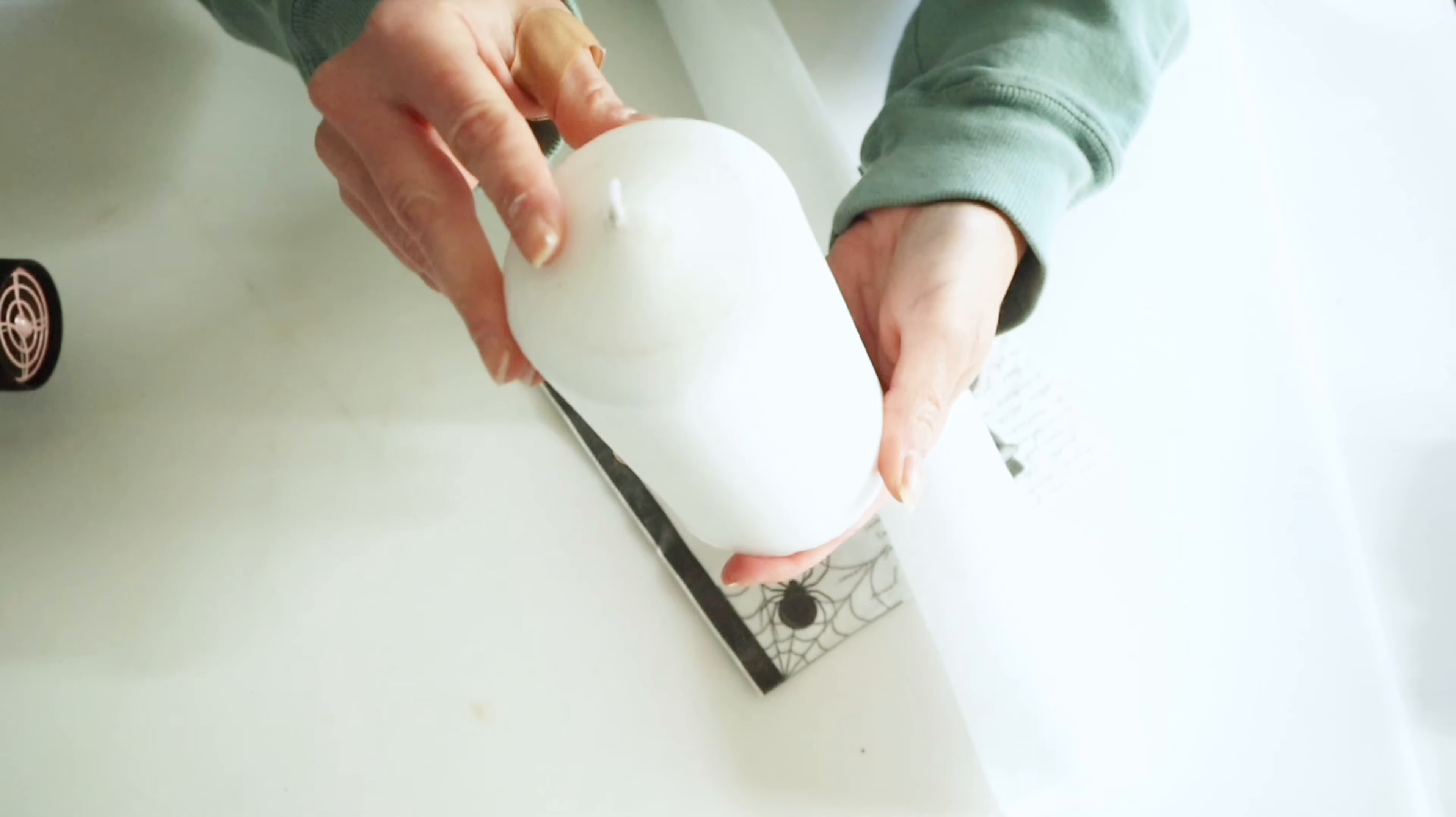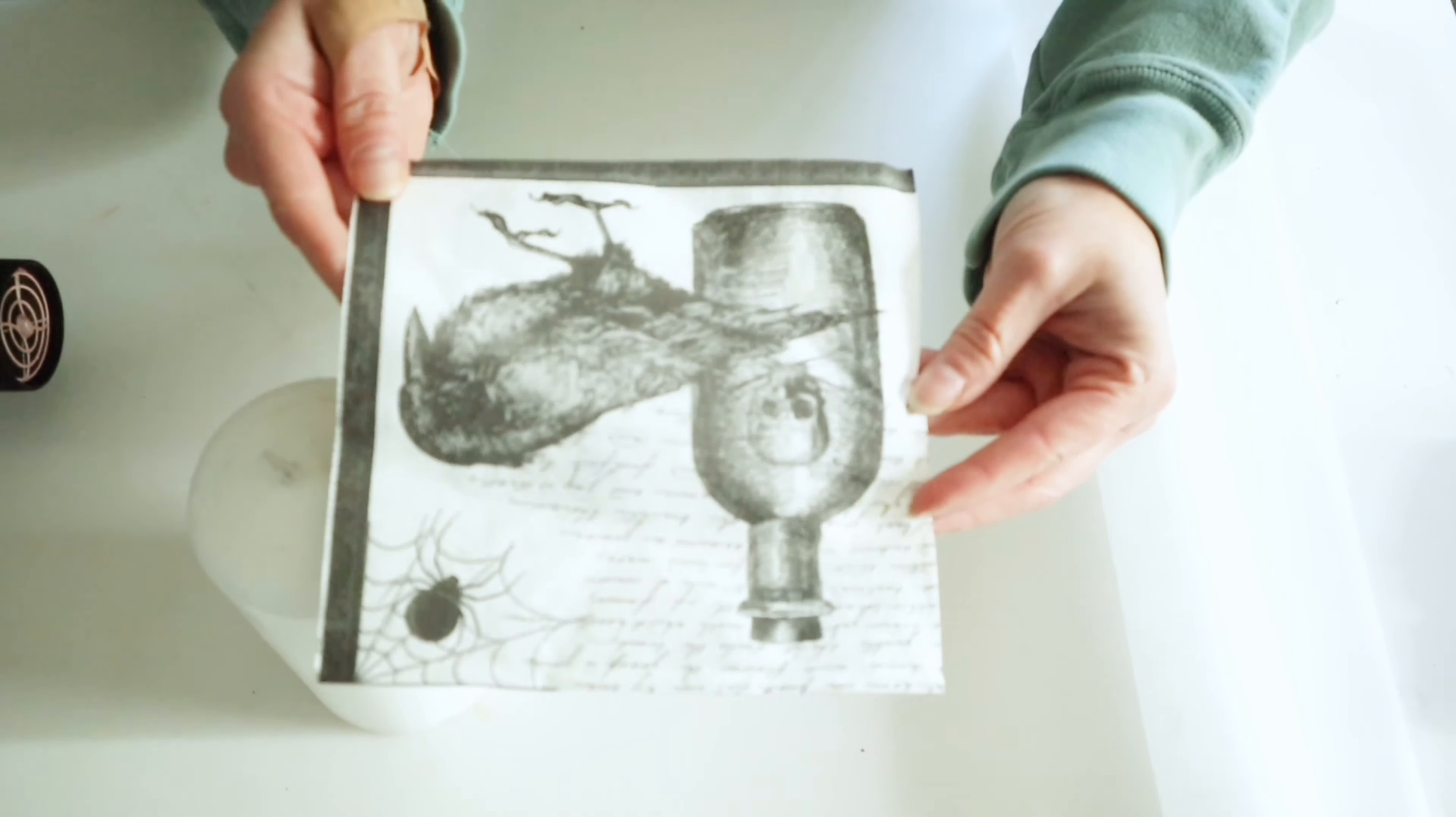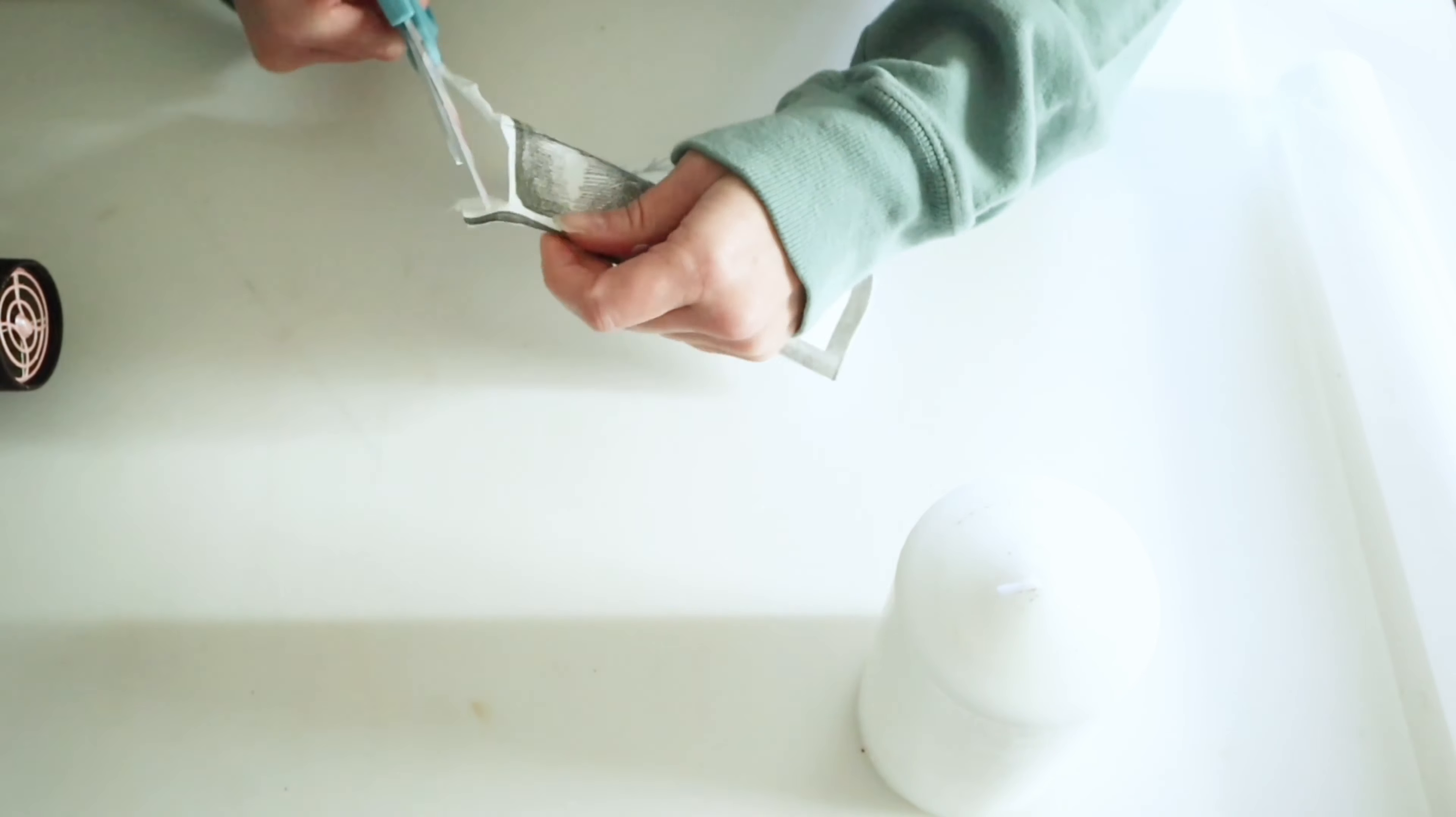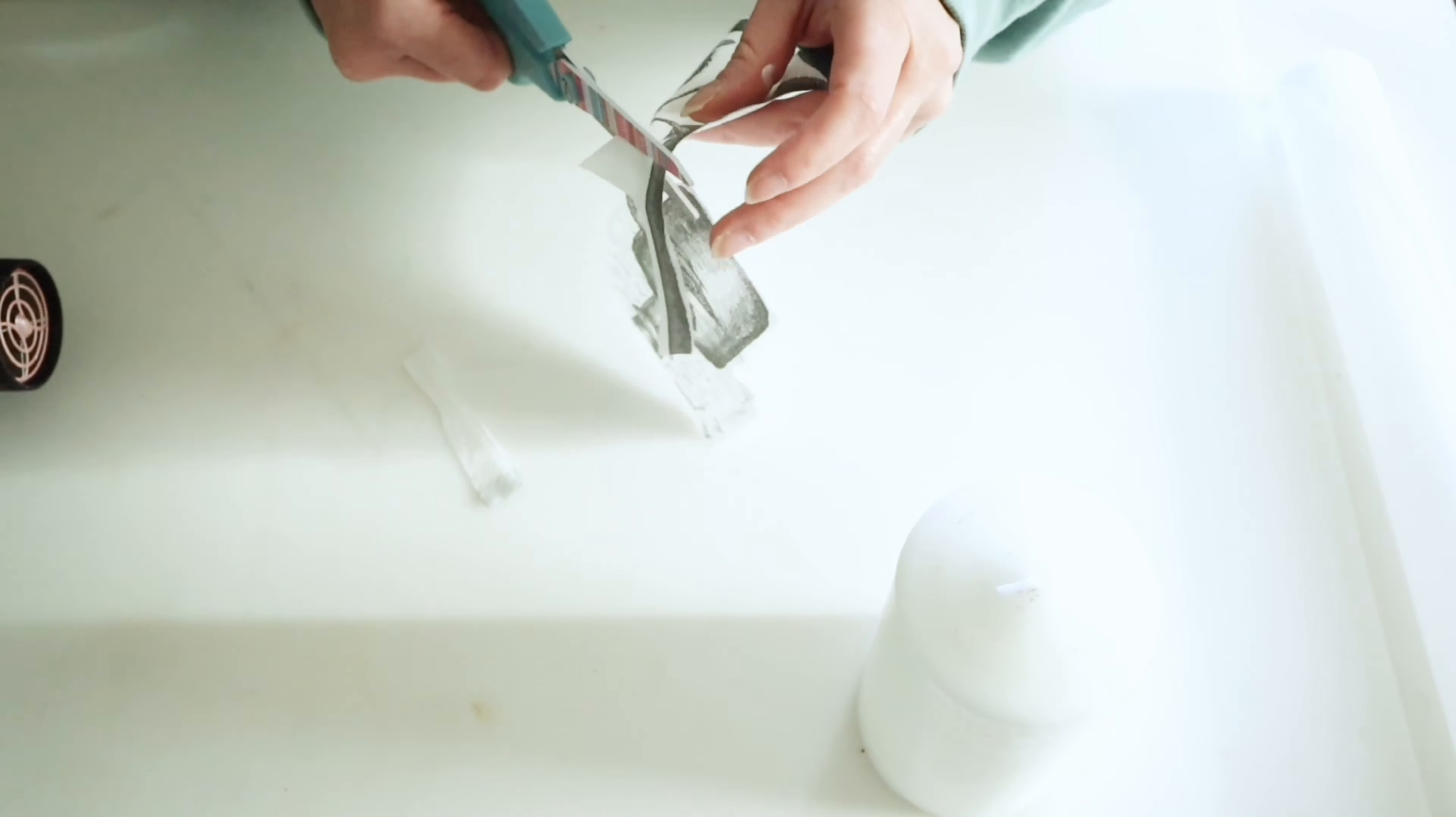This next project is super easy, but is so adorable. You're going to need a pillar candle, some wax paper, and then one of these napkins from Dollar Tree. So the first thing you're going to want to do is go ahead and cut down your napkin. You want to go ahead and cut as much of the excess napkin as you can off of this. You just want to keep the image and what you want to place on the candle.